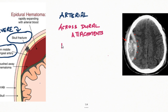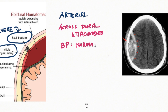Intracranial hemorrhage can also happen if a person is hypertensive, so it is always good to know the blood pressure status of the patient. However, in the case of epidural hematoma, it is mainly associated with trauma and the blood pressure is usually normal at the onset.